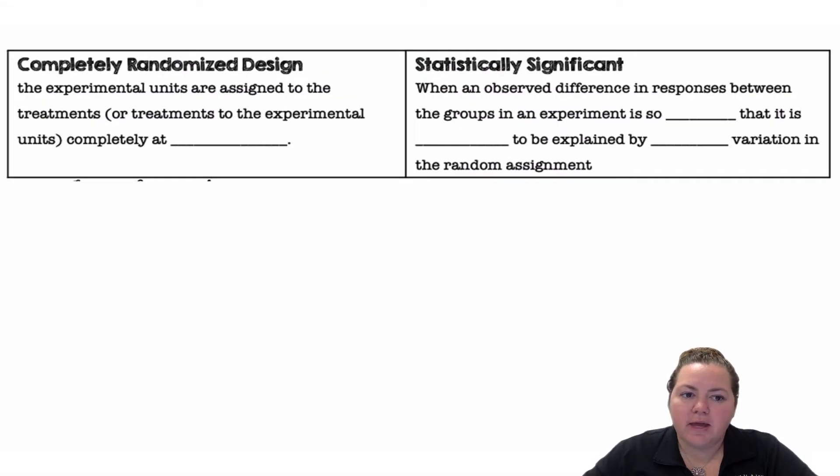A completely randomized design is when the experimental units are assigned to the treatments, or the treatments to the experimental units, completely at random. Statistically significant is when an observed difference in the response between the groups in an experiment is so large that it is unlikely to be explained by chance variation in the random assignment.